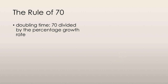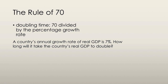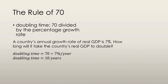The rule of 70 is a method used to figure out the doubling time of any variable. We take the number 70 and divide it by the percentage growth rate of the variable. For example, if a country's annual growth rate of real GDP is 7%, how long will it take for real GDP to double? The doubling time equals 70 divided by 7%, which gives us 10 years.